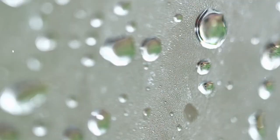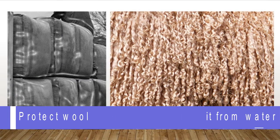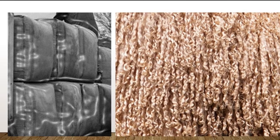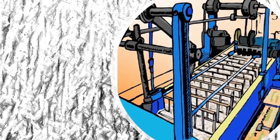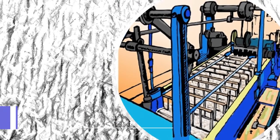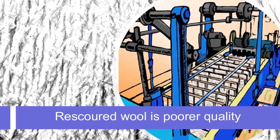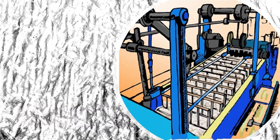Wool easily absorbs water, therefore it must be protected from moisture during storage and transport. Moisture-damaged bales have mohair and wool that is discolored, brittle, and damaged with mold, moldy stains, mustiness, and corrosion. This damaged mohair and wool will need to be separated from the rest and re-scoured, resulting in poorer quality and a reduced price.